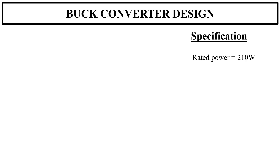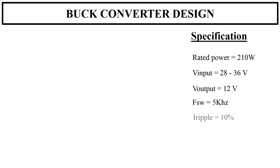Now I will tell you how I calculated the inductance and capacitance values of the buck converter. The specifications are: rated power of the solar array is 210 watts, solar input voltage range is 28 to 36 volts, battery voltage is 12 volts, switching frequency is 5 kHz, current ripple is 10%, and voltage ripple is 1%.